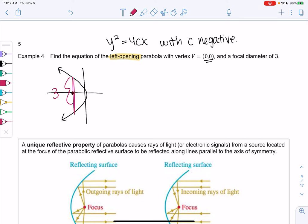And we learned that that diameter is equal to 4c, because it's 2c in both directions. So the absolute value, because we're measuring distance, of 4c equals 3.